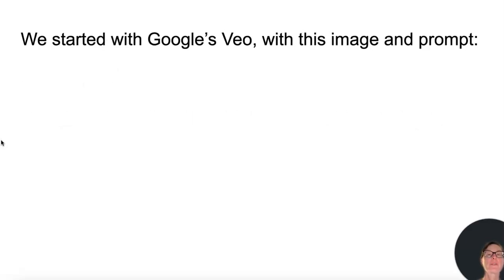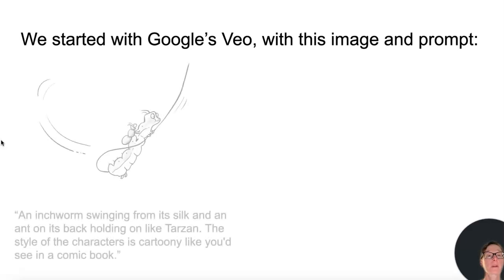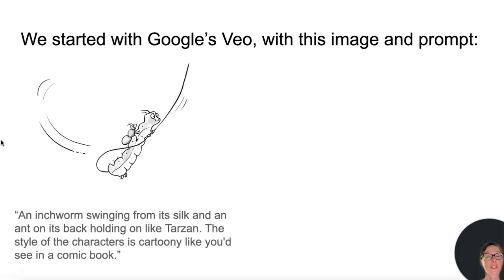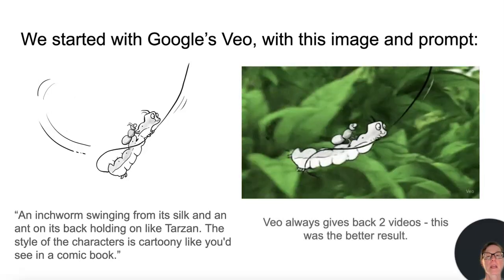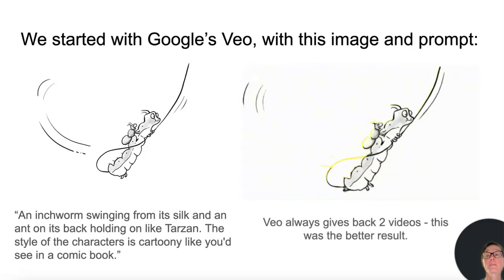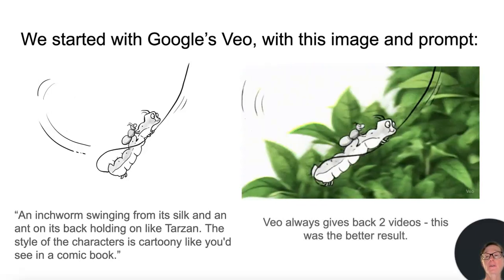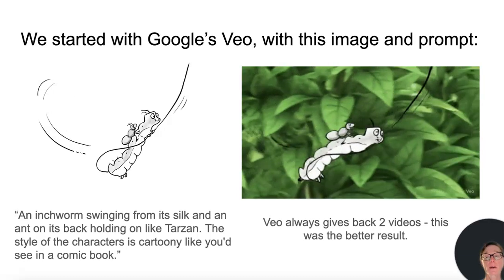We started with Google's Veo with this image and prompt: an inchworm swinging from its silk and an ant on its back, holding on like Tarzan. The style of the characters is cartoony like you'd see in a comic book. Veo always gives back two videos — this was the better result.